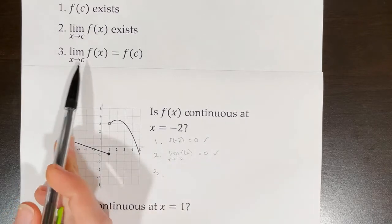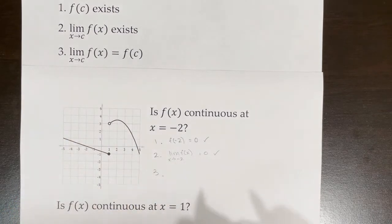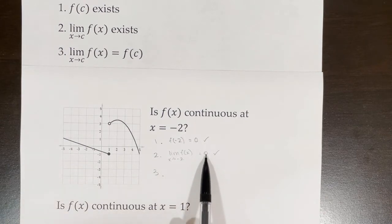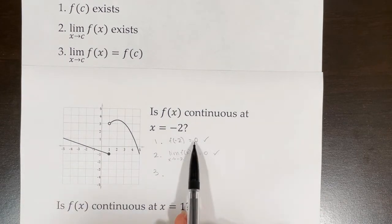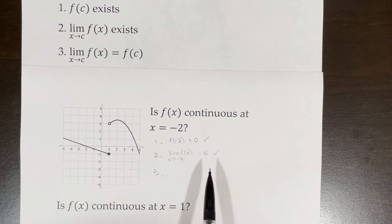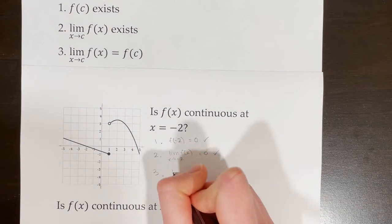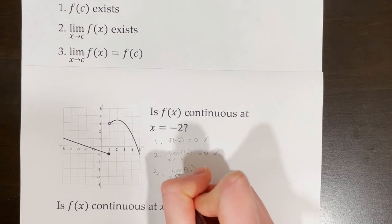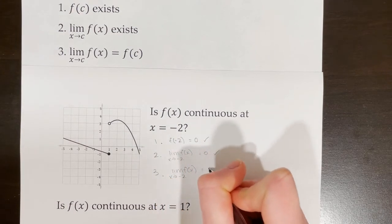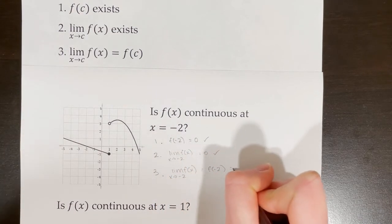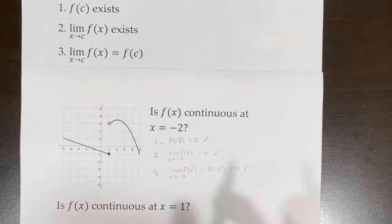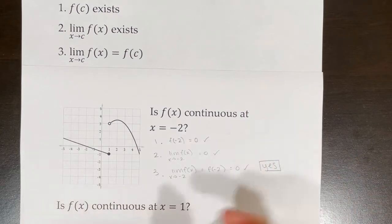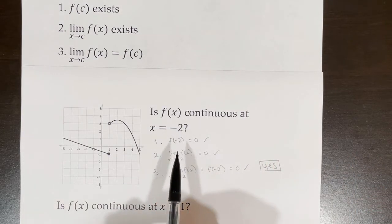Now the limit must equal the actual value of the function. We can see that zero, which is the limit of f of x as x approaches negative two, is equal to f of negative two — they're both zero. So the limit of f of x as x approaches negative two equals f of negative two, and both equal zero. Since all three conditions are met, we can say yes, f of x is continuous at x equals negative two.